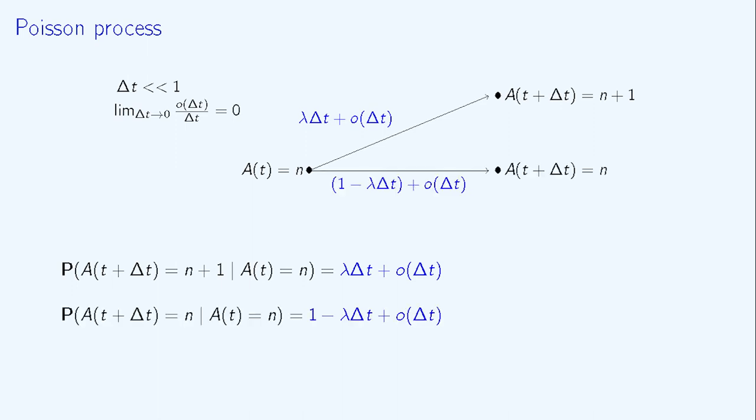Reciprocally, the probability that no customer arrives in the meantime is equal to 1 minus lambda delta t. The probability that more than one customer arrives is negligible with respect to delta t.